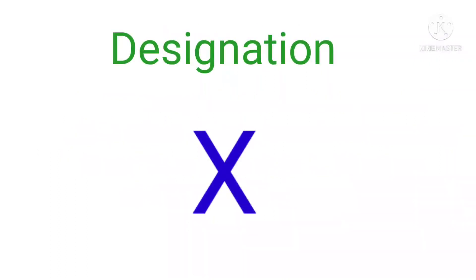What is the designation for decimal scale? X is the designation. The potencies are designated as 1x, 2x, 3x, and so on.